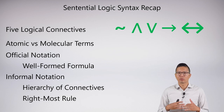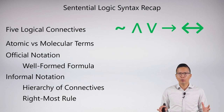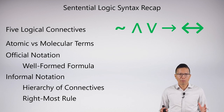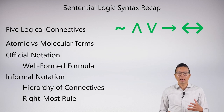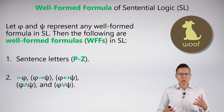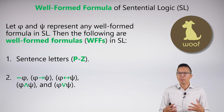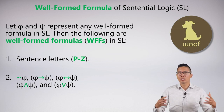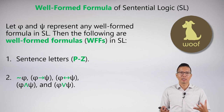These things are probably very natural for you now, and that's really important because all these things will carry forward into predicate logic. A well-formed formula in sentential logic is essentially either just an atomic — which is the sentence letter P through Z — or some sort of molecular sentence, where the molecular sentence is created by combining things with our logical connectives.